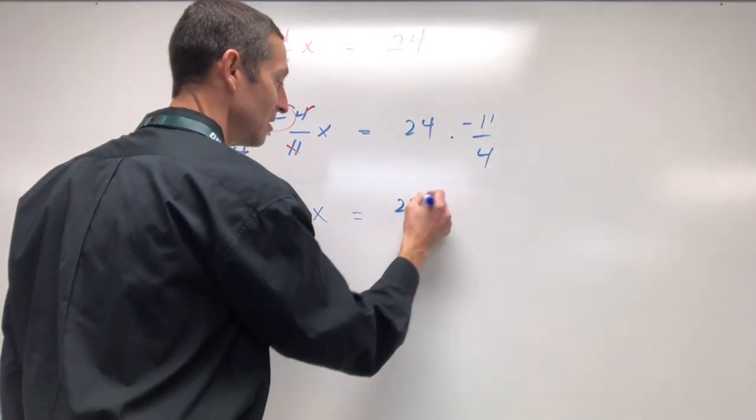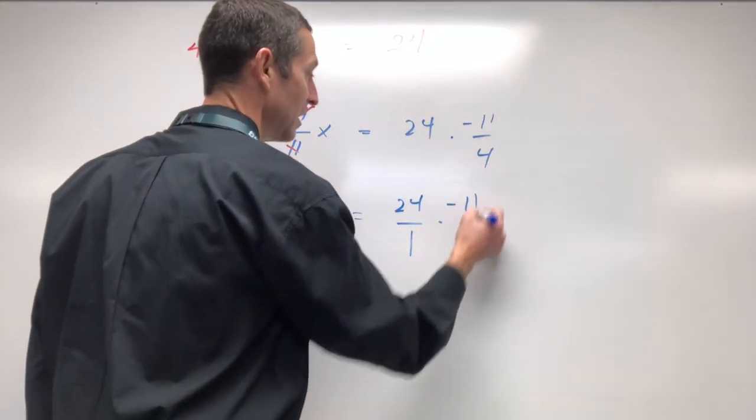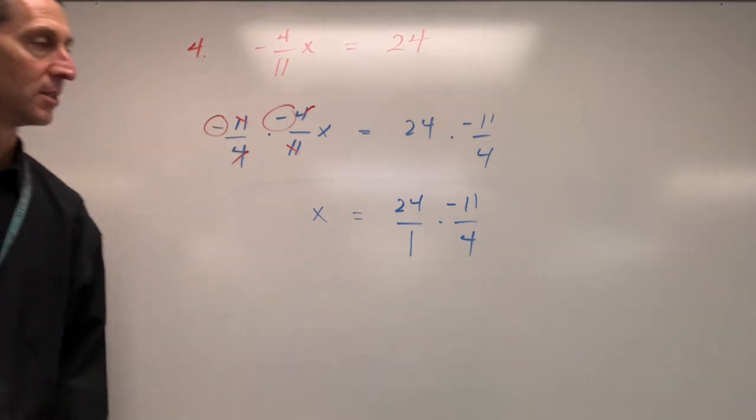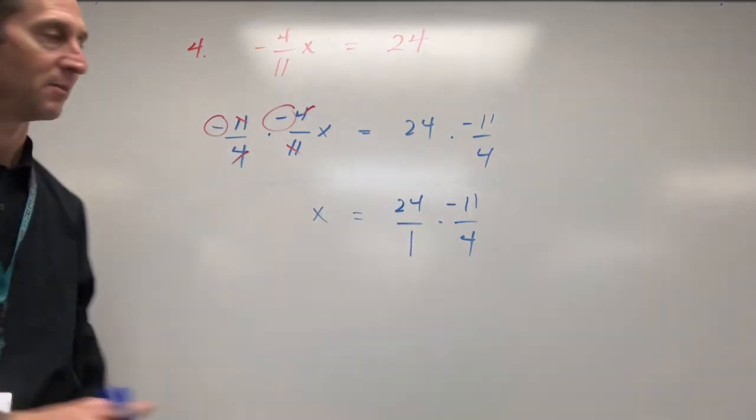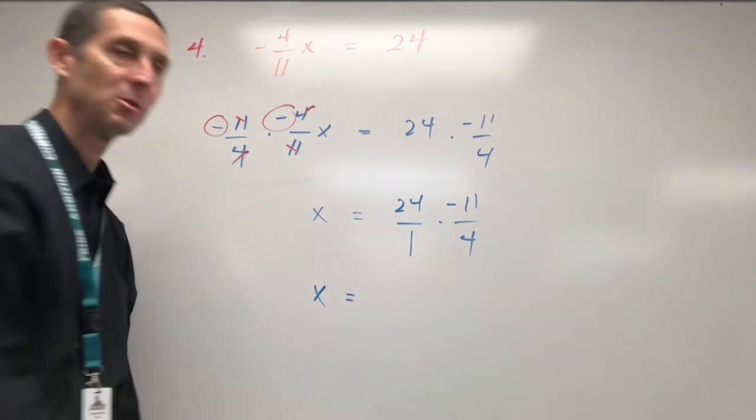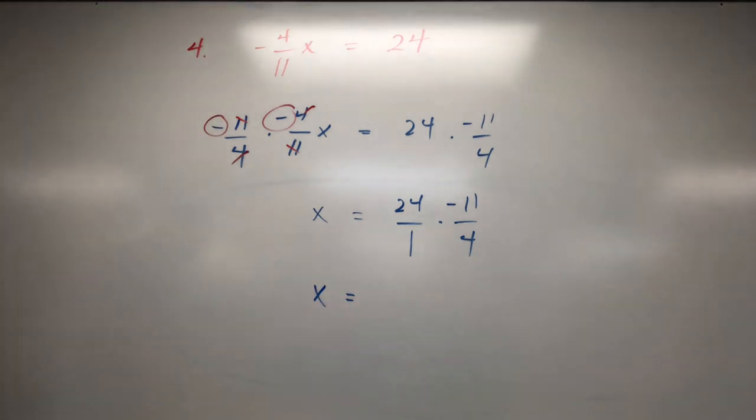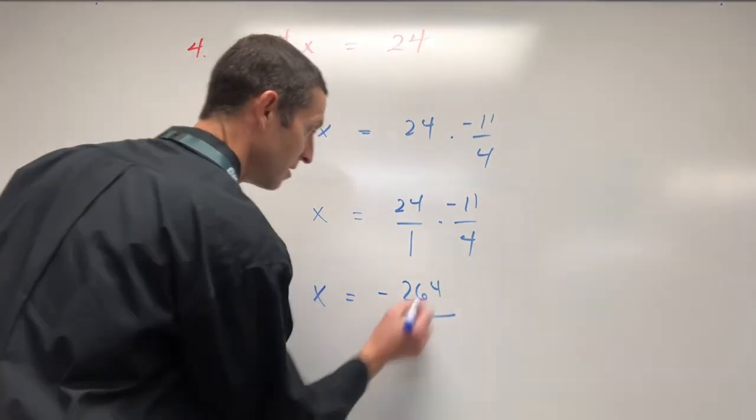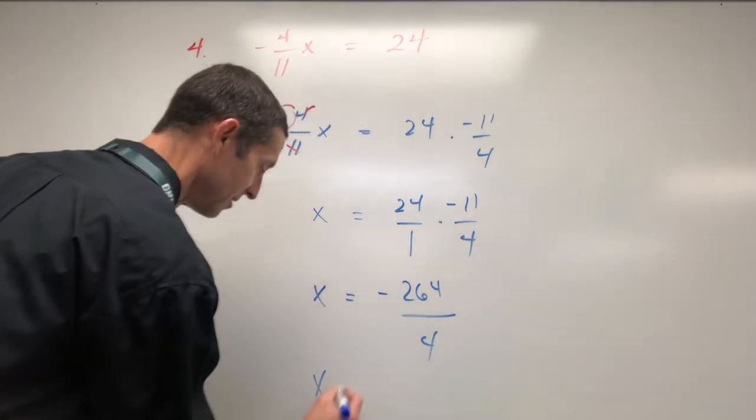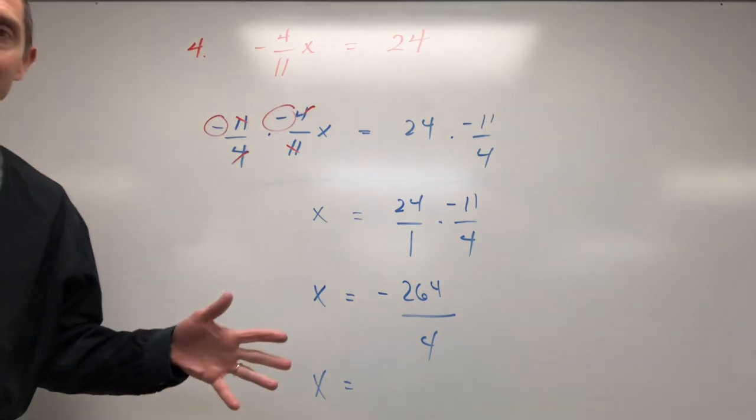Alright, so here's 24. Let's put that over 1 times negative 11 over 4. And so we are going to multiply the tops, multiply the bottoms, then just divide it out. So I got to multiply a 24 times 11. What's that? 264. 1 times 4 is 4. And then you get your calculator.